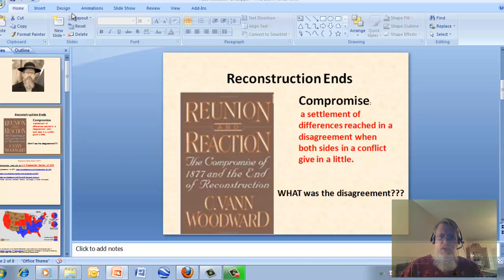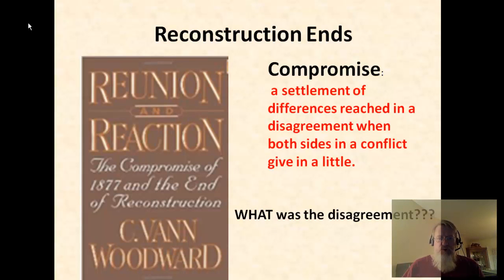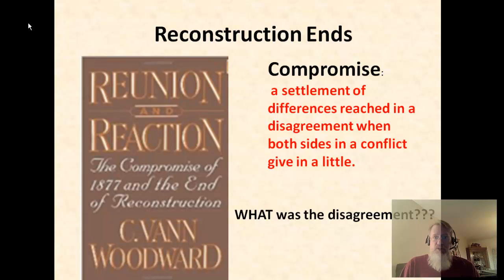Reconstruction came to an end with something called the Compromise of 1877. What does compromise mean? When people settle a disagreement, each side gives in a little bit, and they come to some conclusion to stop the problems. And that's what happened in this Compromise of 1877.